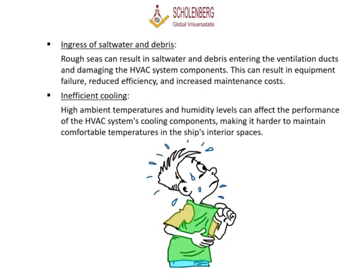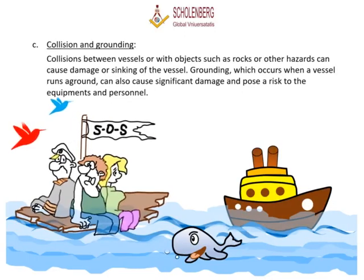Ingress of Saltwater and Debris: Rough seas can result in saltwater and debris entering the ventilation ducts and damaging the HVAC system components, resulting in equipment failure, reduced efficiency, and increased maintenance costs. Inefficient Cooling: High ambient temperatures and humidity levels can affect the performance of the HVAC system's cooling components, making it harder to maintain comfortable temperatures in the ship's interior spaces.